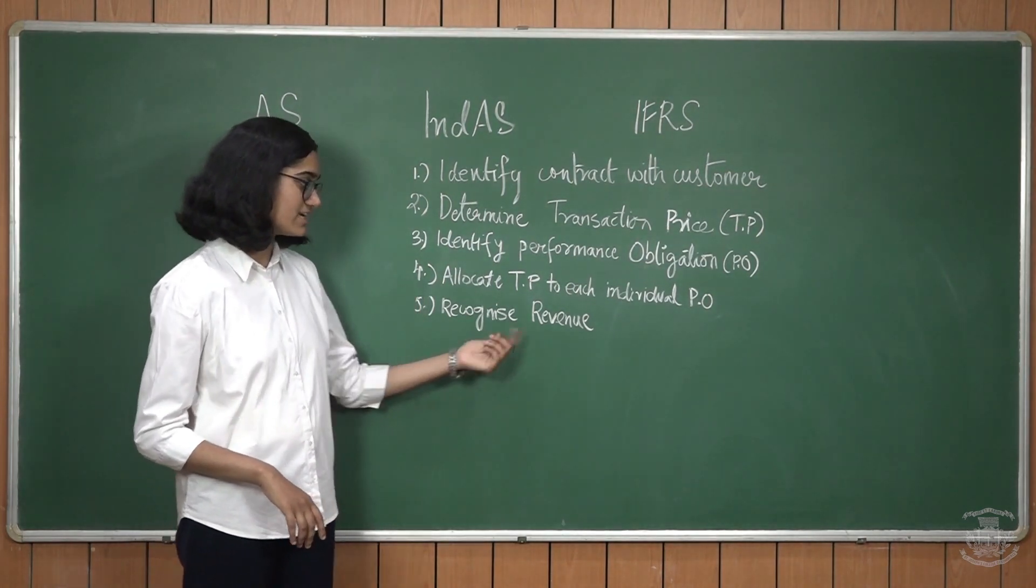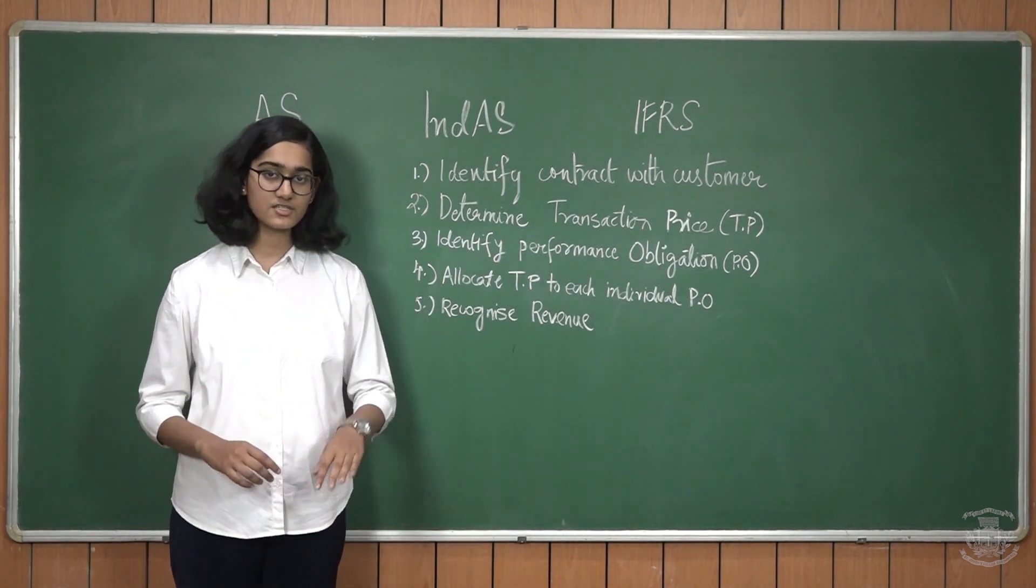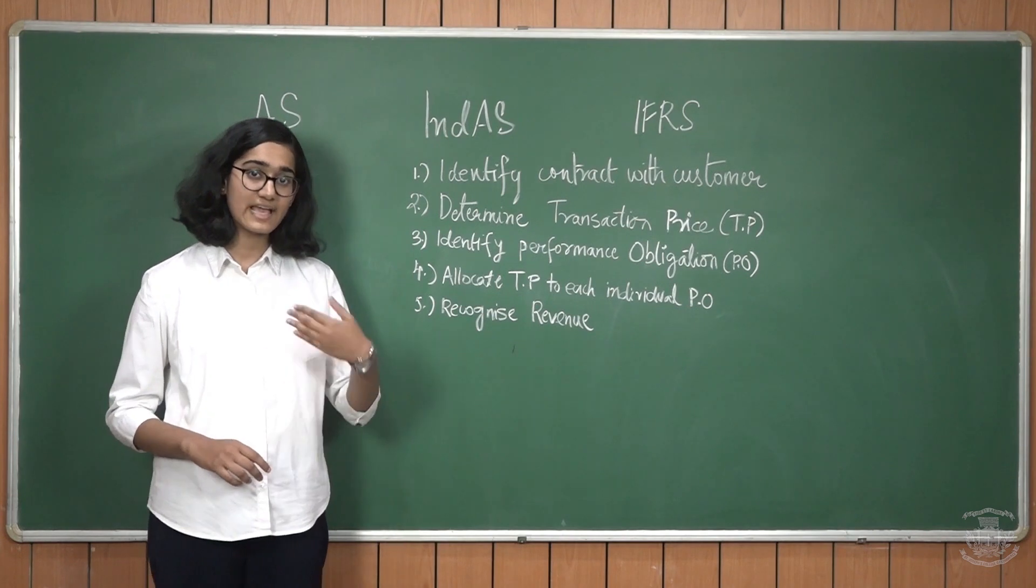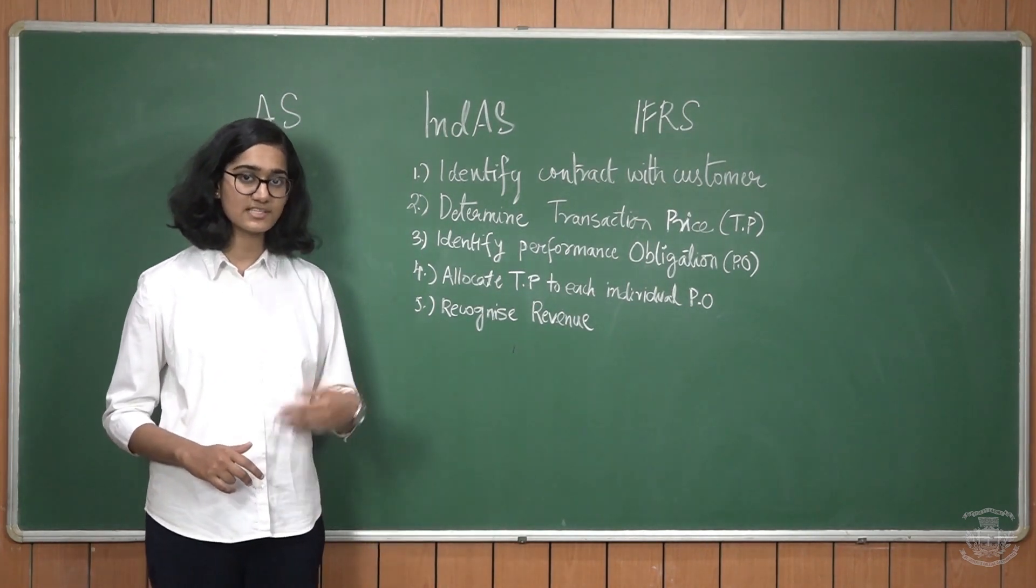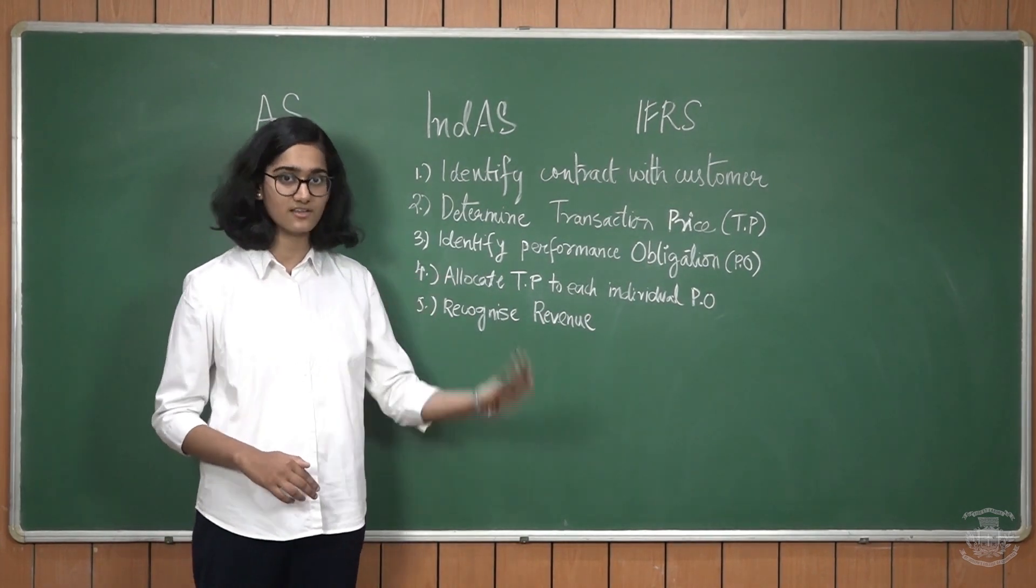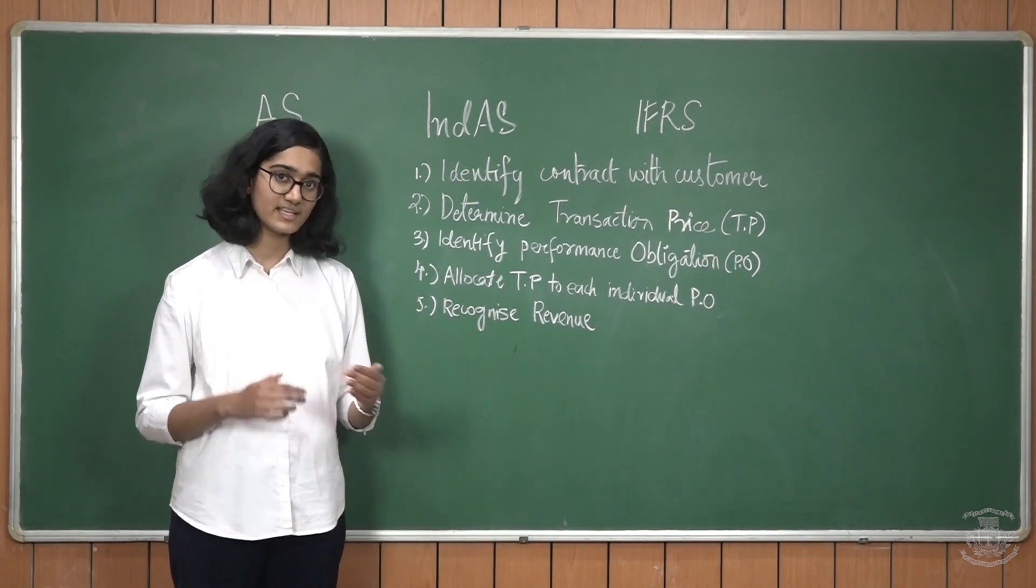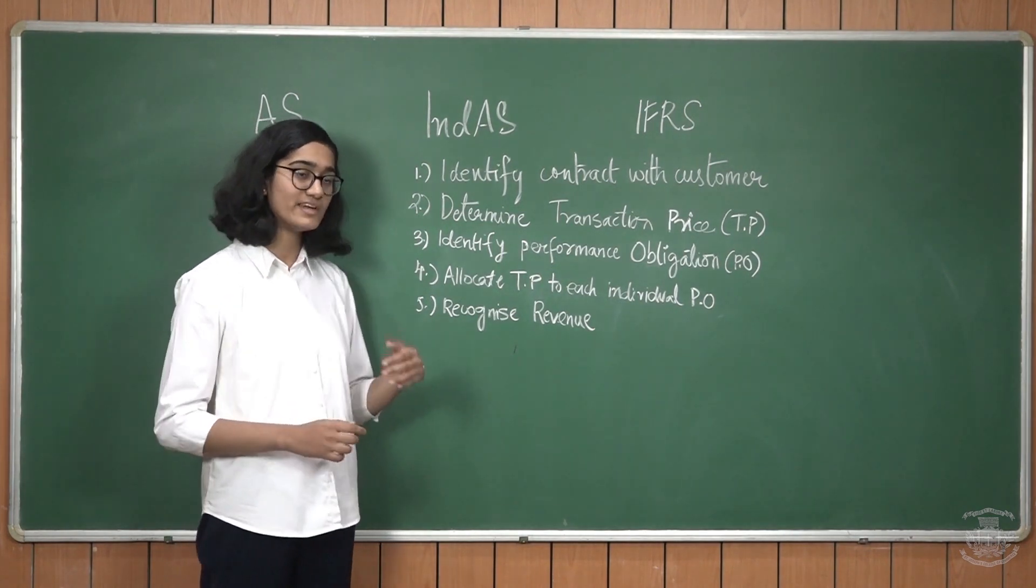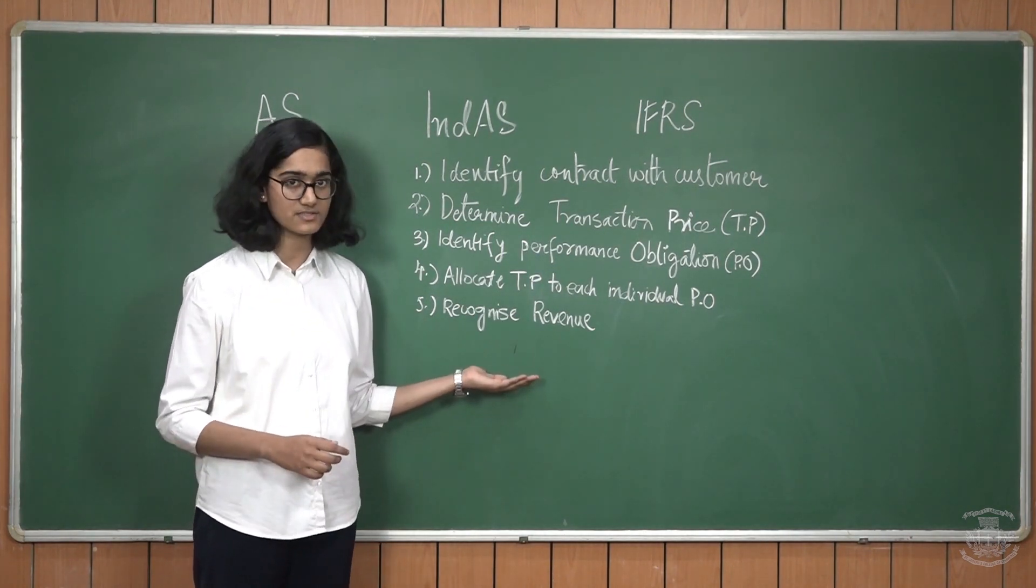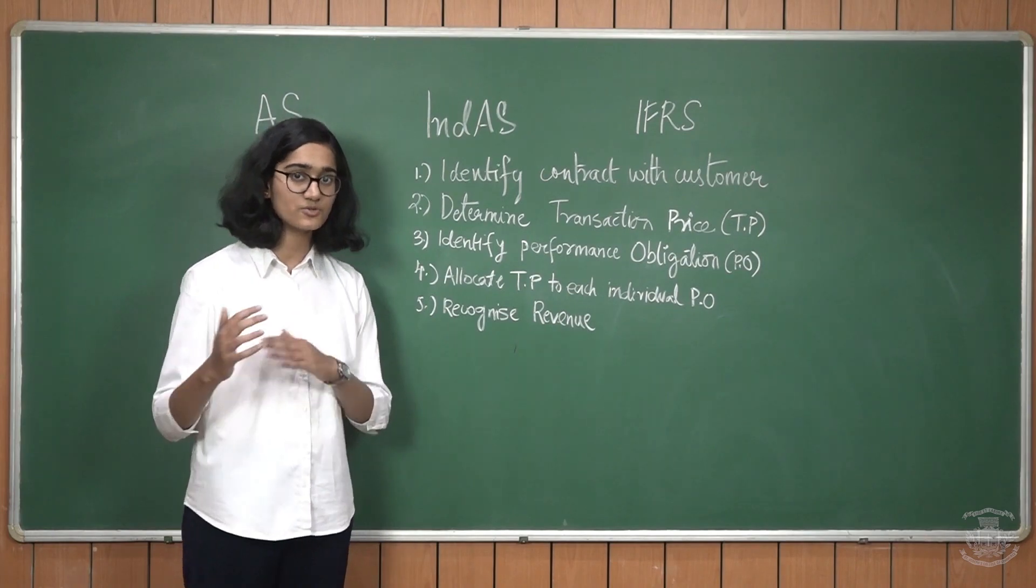Point number five is recognized revenue. This recognition of revenue is only when the entity has fulfilled the performance obligations. Let's say, suppose the entity has fulfilled and has delivered the machine, then the entity can recognize revenue only up to the machine. And later on, when it fulfills the installation services, it will record revenue up to that point also.